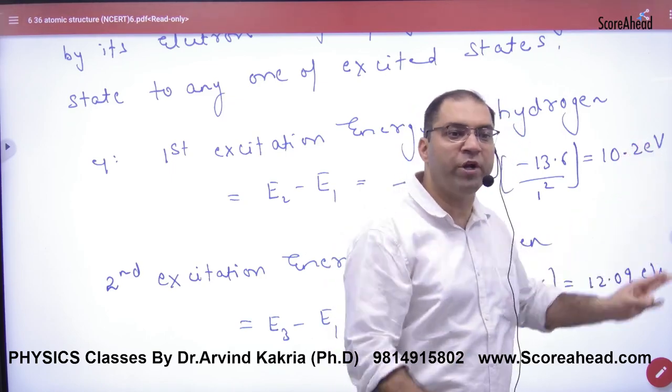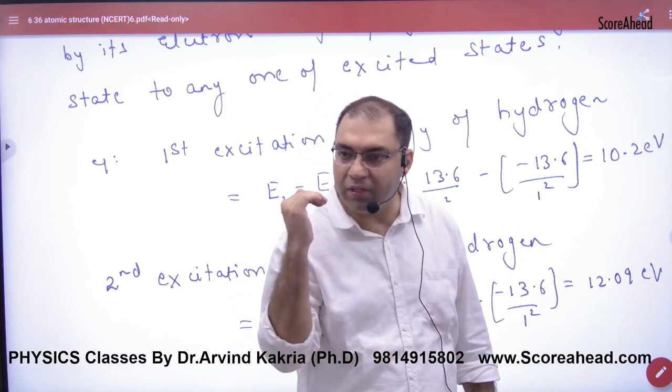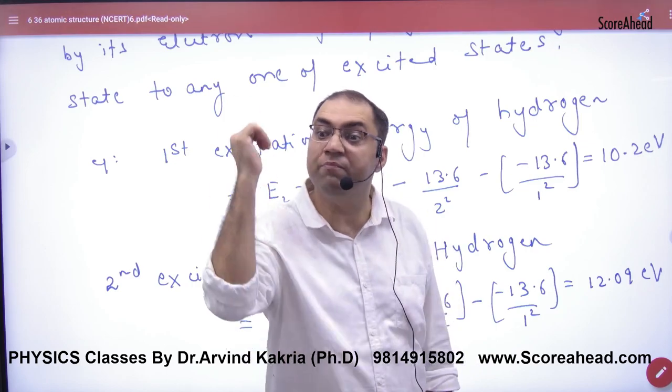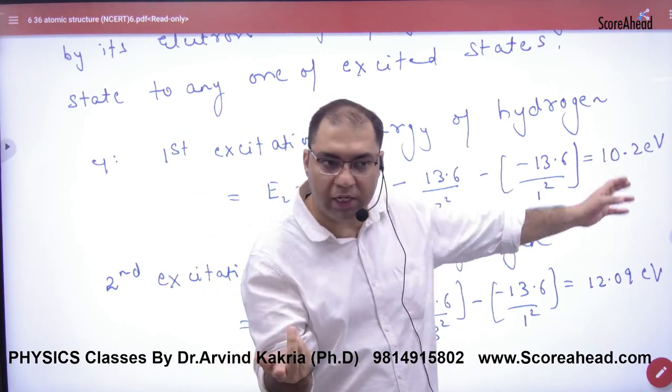...will be 10.2 volts. This electron going from n=1 to n=2 gives the excitation potential. For the potential, we don't have to do anything - it's just the voltage.